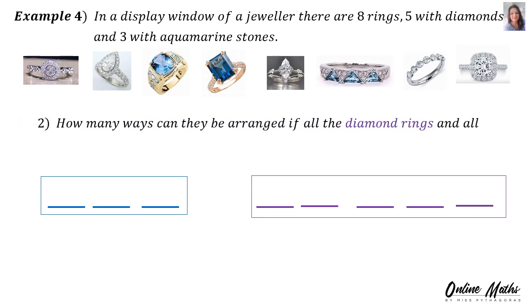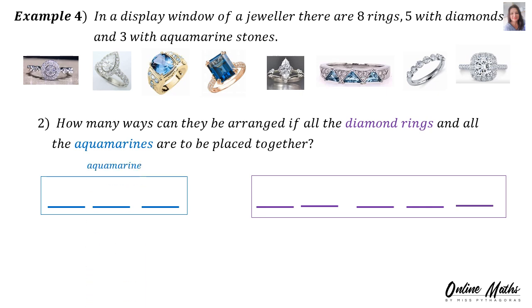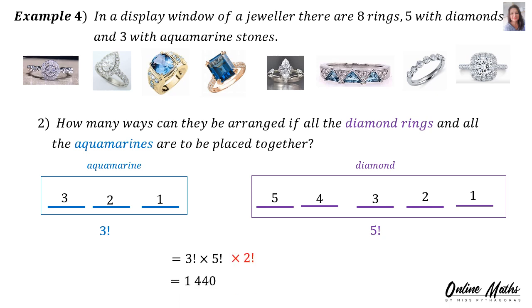Question 2 says: how many ways can they be arranged if all the diamond rings and all the aquamarines are to be placed together? There are 2 groups. The first group is for the aquamarines, and there are 3 of them, therefore 3 factorial. The other group is for the diamond rings and there are 5 of them, therefore 5 factorial. The answer is 3 factorial times 5 factorial, but then there are 2 groups, so times 2 factorial. The answer is 1,440 ways.